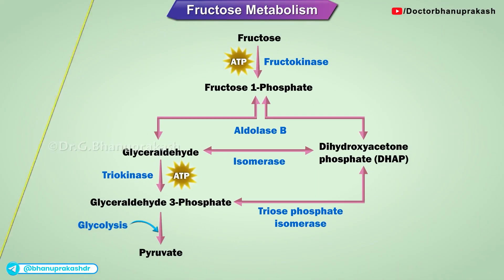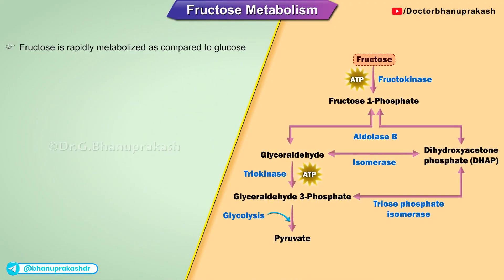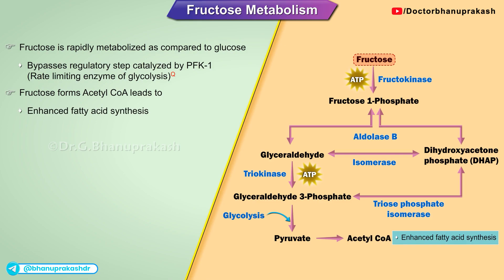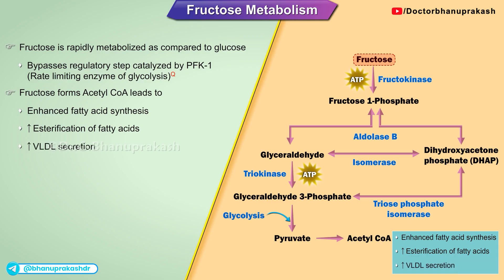Metabolism of Fructose. Fructose is rapidly metabolized as compared to glucose because it bypasses the regulatory step catalyzed by PFK1, which is the rate-limiting enzyme of glycolysis. Further, fructose forms acetyl coenzyme A, which leads to enhanced fatty acid synthesis, increased esterification of fatty acids, and increased VLDL secretion, thus increasing fats.